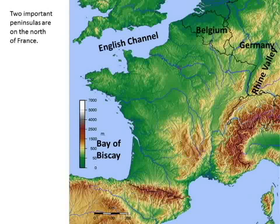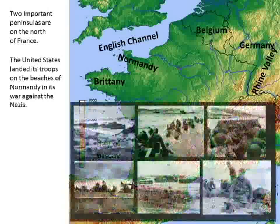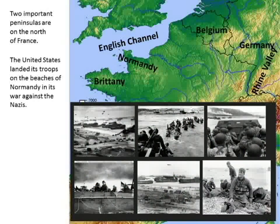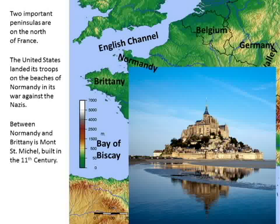In the north, there are two peninsulas: one is called Normandy, and the other one is called Brittany. You may have heard of Brittany Spaniels - that's where they come from. Normandy is where the United States landed its troops in World War II. Between Normandy and Brittany is Mont Saint-Michel, built in the 11th century - a beautiful cathedral town. It was an island when they built it, but the sea levels are going out, and it's become a peninsula.